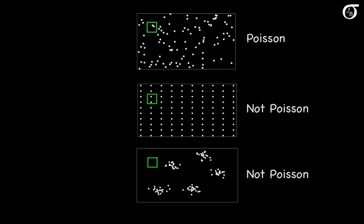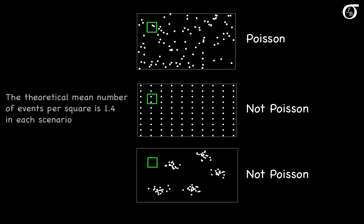To summarize, here we have the three situations. In each one, the theoretical mean number of events in a randomly selected green square is about 1.4, but only the top situation has a Poisson distribution. If we use the Poisson distribution to calculate probabilities in the other two situations, we could be very far off and misled.